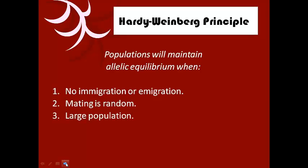Third, we need to have a large population. When looking at small populations, random changes in allelic frequencies can happen pretty easily. We'll talk more about that in a different podcast. But with a large population there's still lots of mixing, which means equilibrium is easier to maintain.